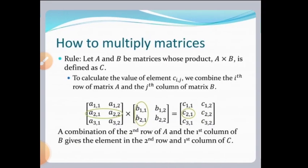Next, how to multiply two matrices. Let A and B be matrices whose product A×B is defined as C. To calculate the value of element C_ij, we combine the i-th row of matrix A and the j-th column of matrix B. For example, a combination of the second row of A and the first column of B gives the element in the second row and first column of C.